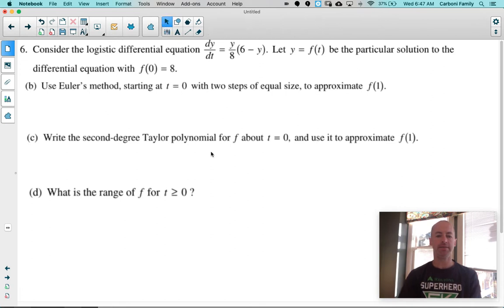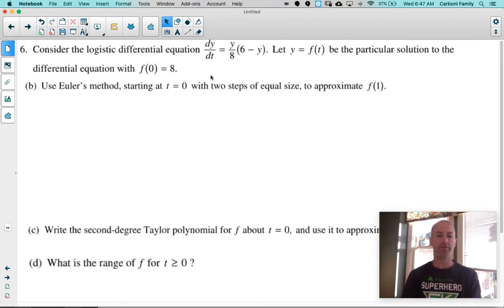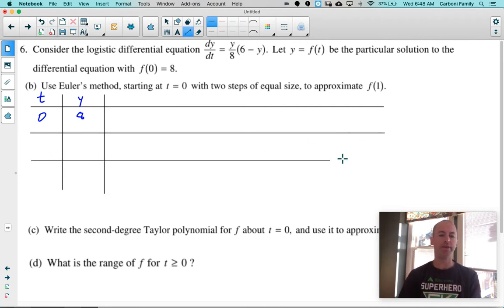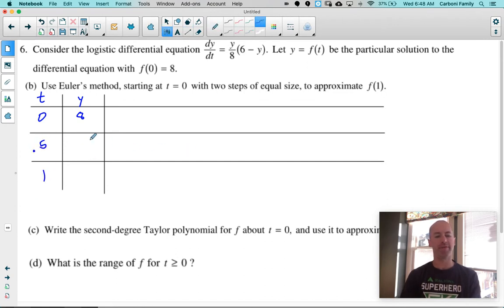Part B is an Euler's method problem. And I am a fan of doing Euler's method with a table. And so I'm going to make myself a nice little table here. And what I know is that I am starting at the point. So we have values of T and we have values of Y. I'm starting at the point zero eight because we're approximating F of one. So zero eight. And I'm sorry, my mind is running all over the place here. Okay. So I am using two steps and I want to get to a T value of one. So that's where I want to finish, which means I'm going to have to step my T's up in increments of 0.5.